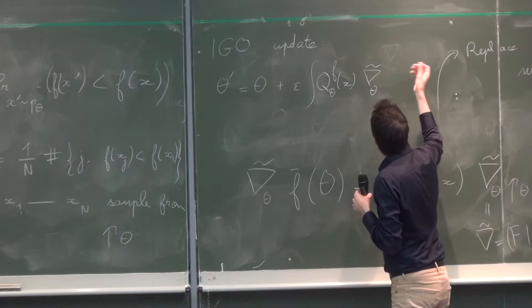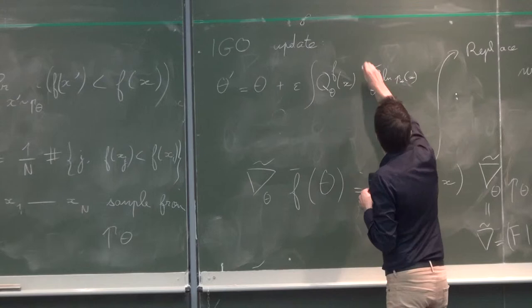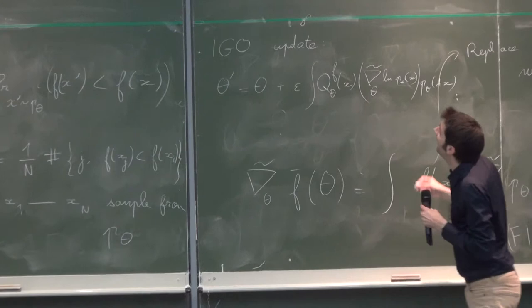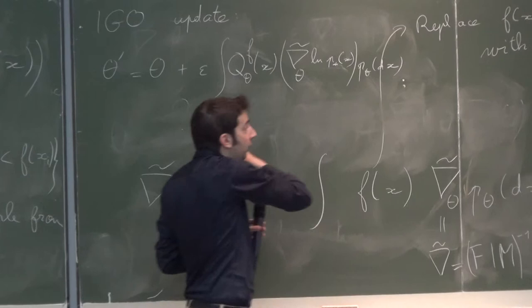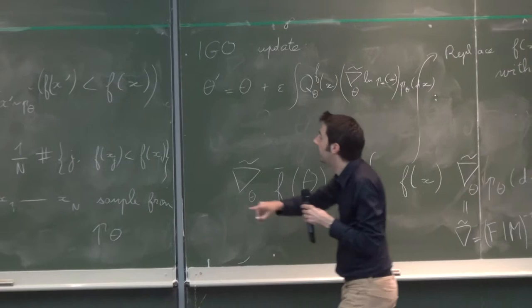Times the integral of the quality times the natural gradient of log p theta of x. And this integral is with respect to p theta, and this is what you get if you have infinitely many samples, that is if you compute the expectation exactly. And in practice you have a sample size and you replace the integral with a sample, Monte Carlo sample, and the quality with the empirical quality inside your sample.